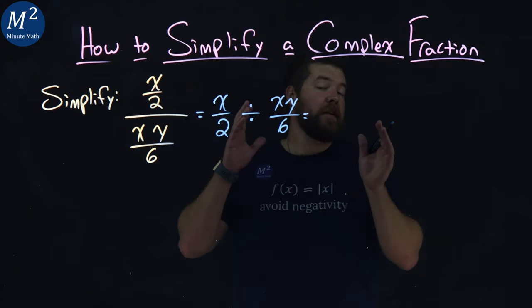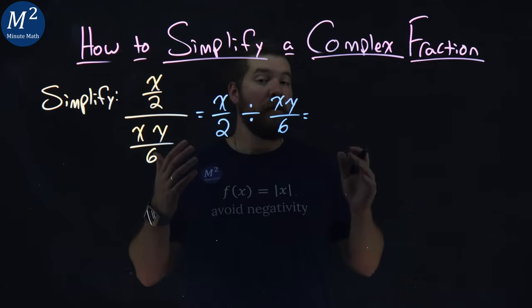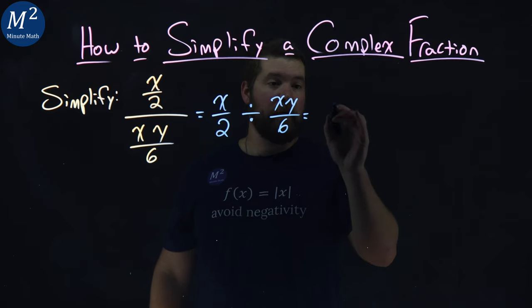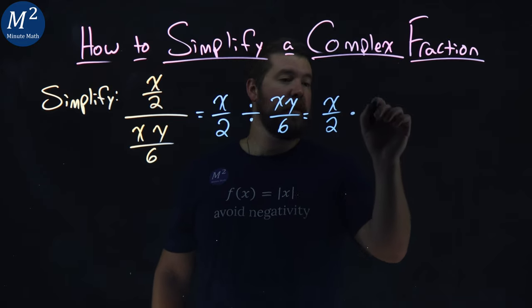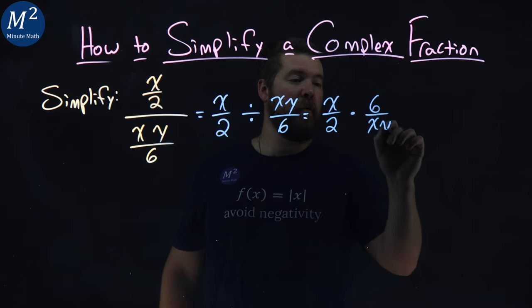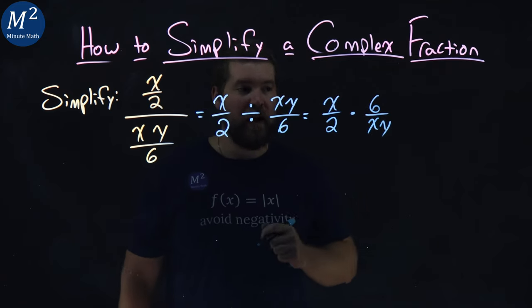One thing we know about dividing fractions is that the same thing is multiplying by the reciprocal. x over 2 times 6 over xy now. We flip the second fraction.